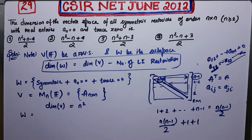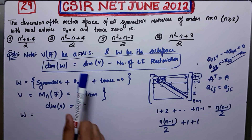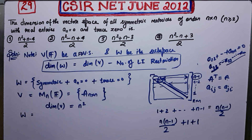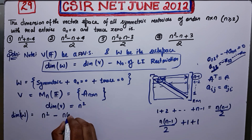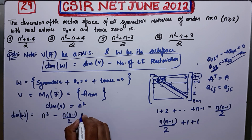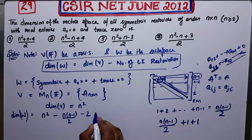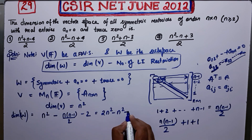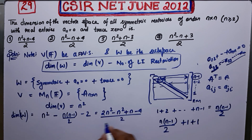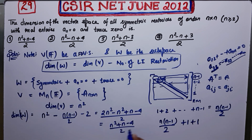Now applying the formula: dim(W) = n² − [n(n-1)/2 + 1 + 1]. Taking the LCM: dim(W) = (2n² − n² + n − 4) / 2 = (n² + n − 4) / 2. This is the dimension of the subspace W.